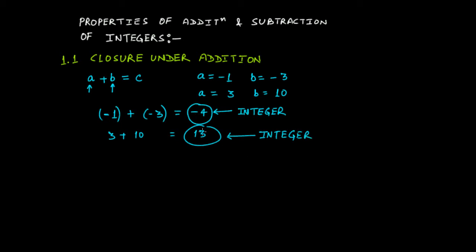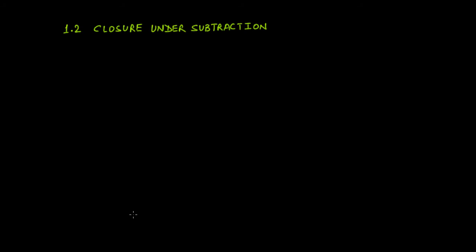We got a negative integer in one case and a positive integer in the other. Therefore, we can say that addition of integers is closed — it follows the closure property. Now, what about subtraction? Does subtraction of integers also follow the closure property? Let's take an example: a = -1 and b = -3.